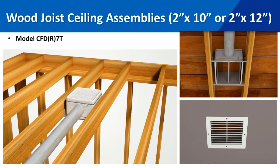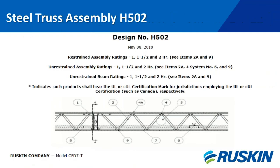For installation, rather than going through all the different installation types, Ruskin has YouTube videos for the CFD 7 and CFD 7T installation so you can see all the different ways the damper can be installed properly. Something new is the steel truss assembly design number H 502. This is a Ruskin exclusive steel truss assembly, and it is the only steel truss assembly that has a ceiling fire damper called out on its design.